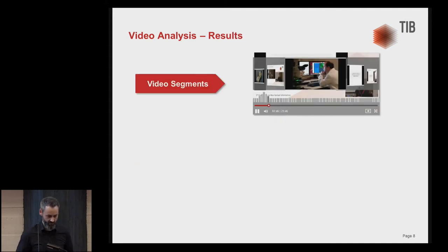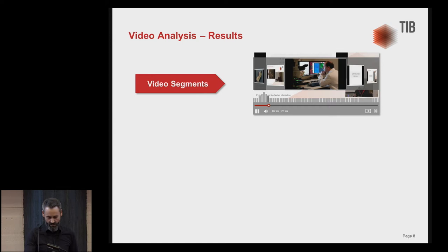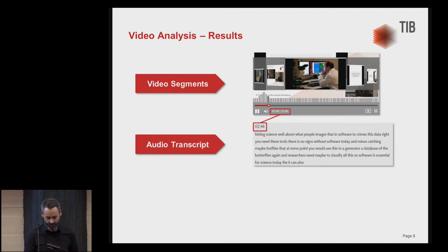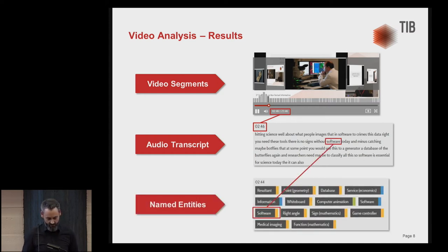To illustrate the results of this process: first, we segment the video so you get different segments you can use to navigate through the video. For each video there are several keyframes used for preview functions. These segments are aligned with the audio transcript, which is also segmented, so for each segment you get a part of the audio transcript. We do this in English and German. On top of that, you have named entities from the GND — the integrated authority file. In this example, software is mentioned within the transcript and linked to the GND entity.